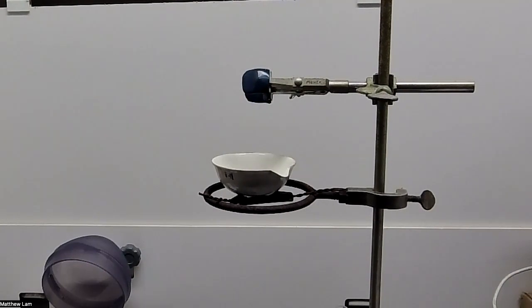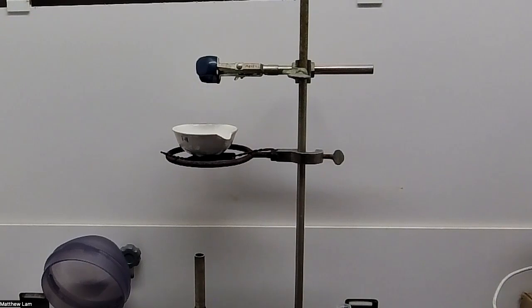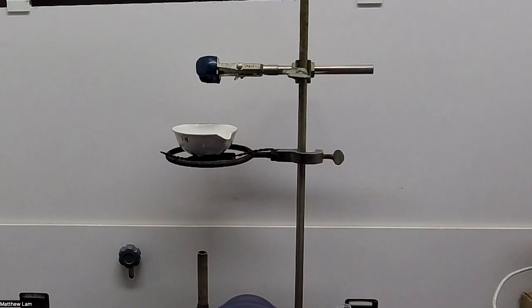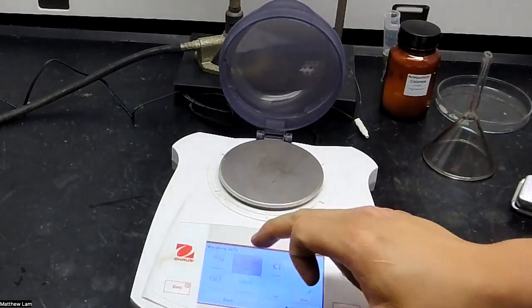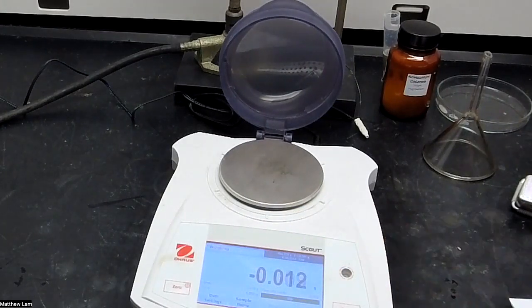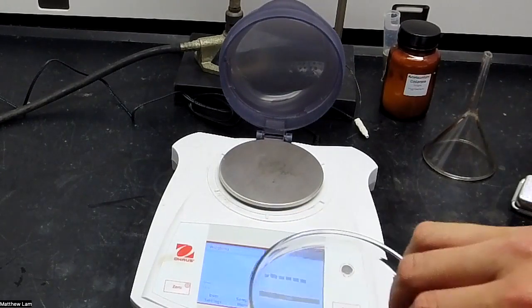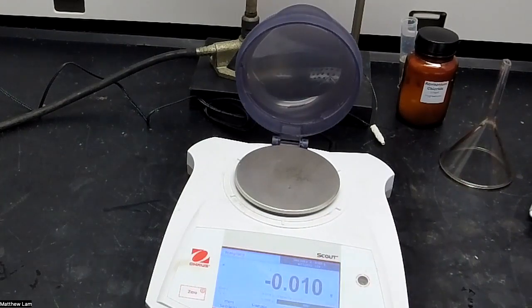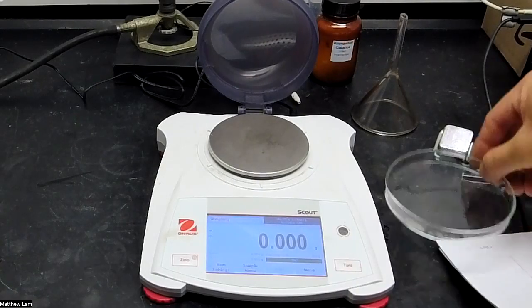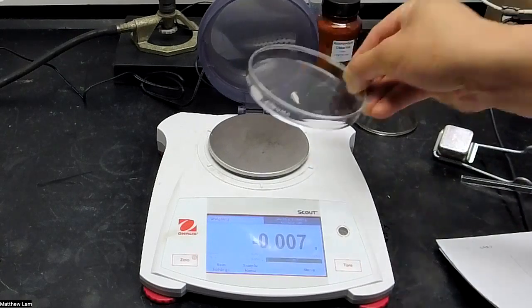So the first thing they want us to do is measure the mass of half the Petri dish. So I'll push this to the back, bring our balance to the front, make it so you guys can see it. They want us to measure half of our Petri dish. Let me reset that real quick.